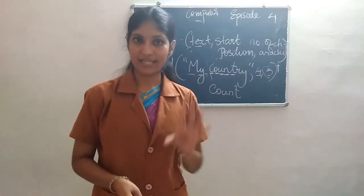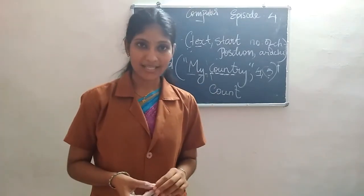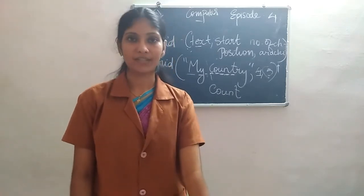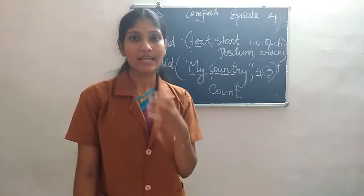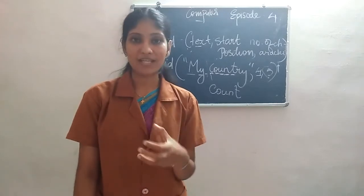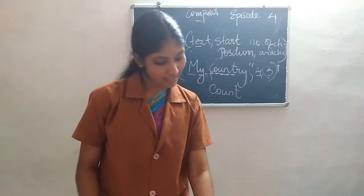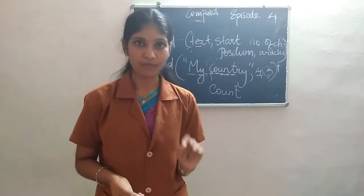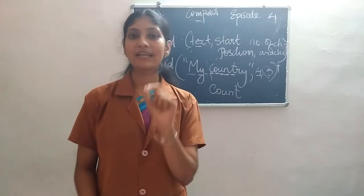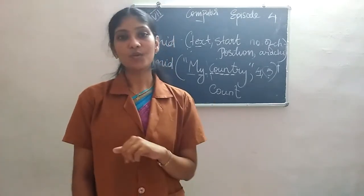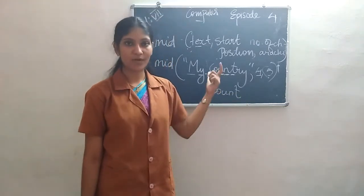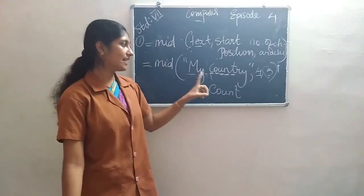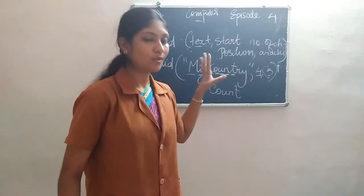What are the text functions? First is CONCATENATE — we already discussed in our previous class that concatenate joins multiple strings into a single word. Next is LEN (length) — we can find the length of a string, counting the number of characters. Then LOWER converts uppercase input to lowercase. UPPER converts lowercase input to uppercase. RIGHT returns characters from the right side up to a specified number. And MID takes input text, a starting position, and the number of letters for the output.